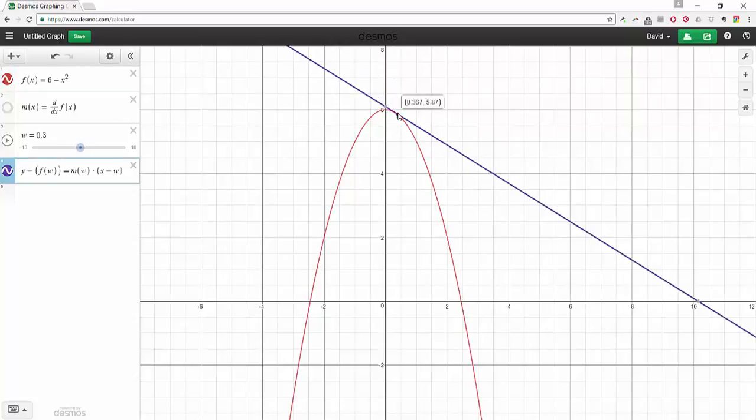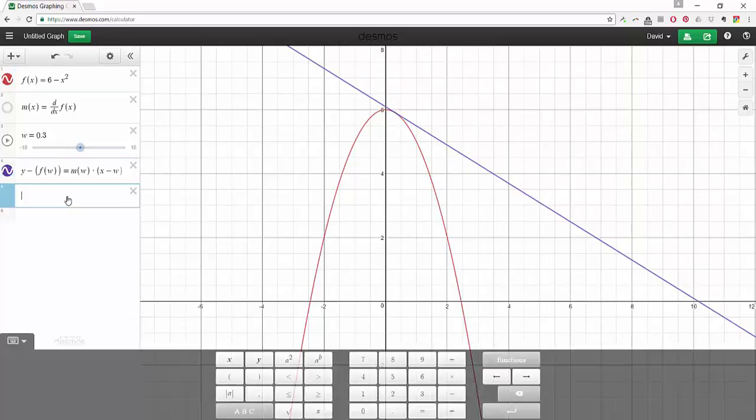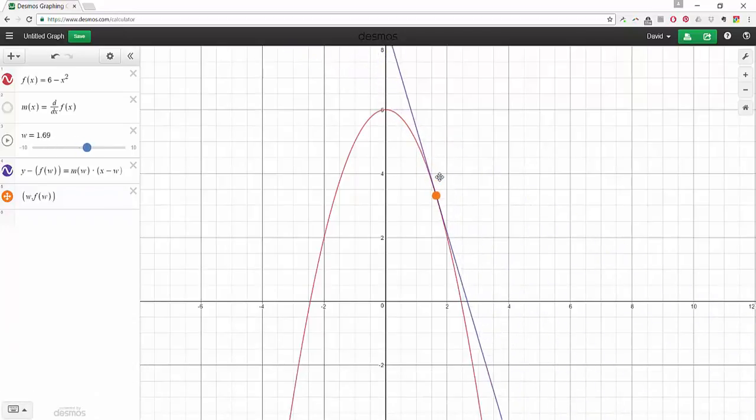What would be even nicer is if we could grab it. So let me show you how you can grab it. Let's put a point at w, f of w. So now that's a point you can actually grab and move around. So that's pretty keen.